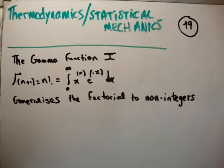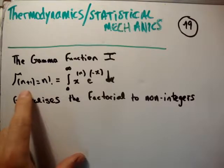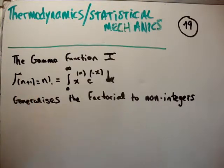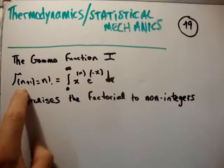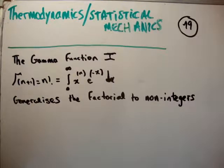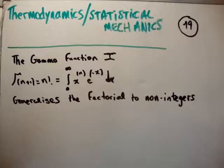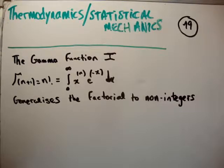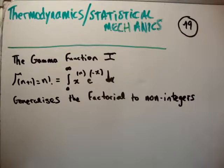I've defined the gamma function. We say that the gamma function of n plus 1 is equal to n factorial. This n plus 1 is important, and I'll speak about that later. We define it equal to this particular integral. The bottom line up front is that the gamma function generalizes the factorial to non-integers.